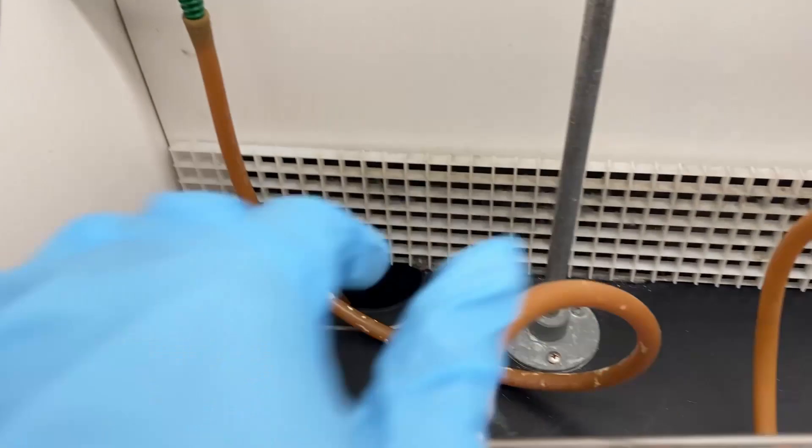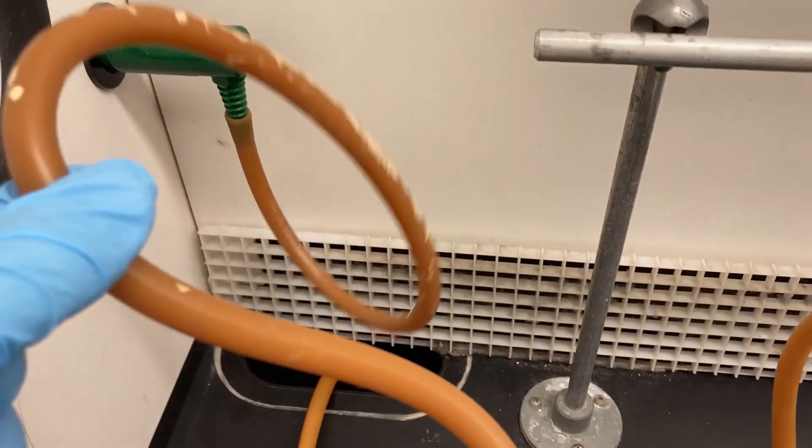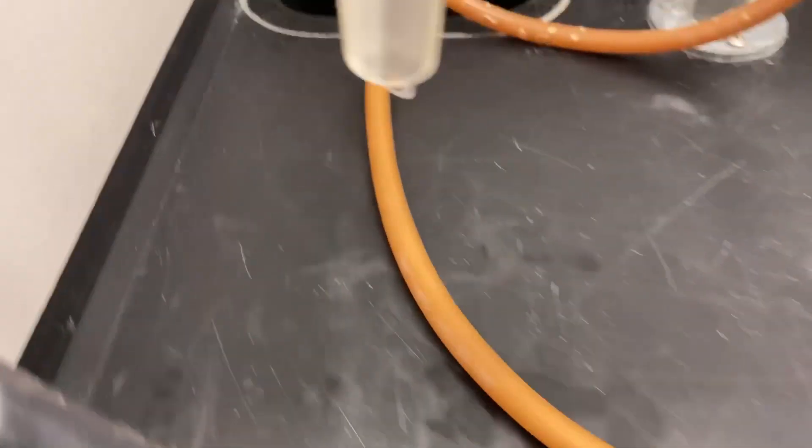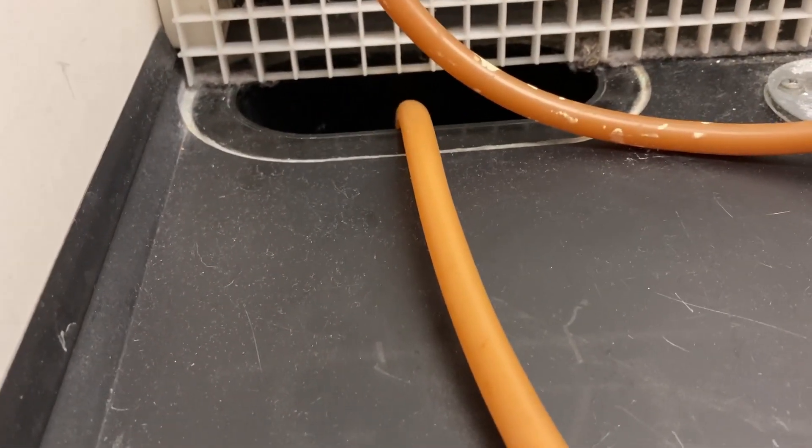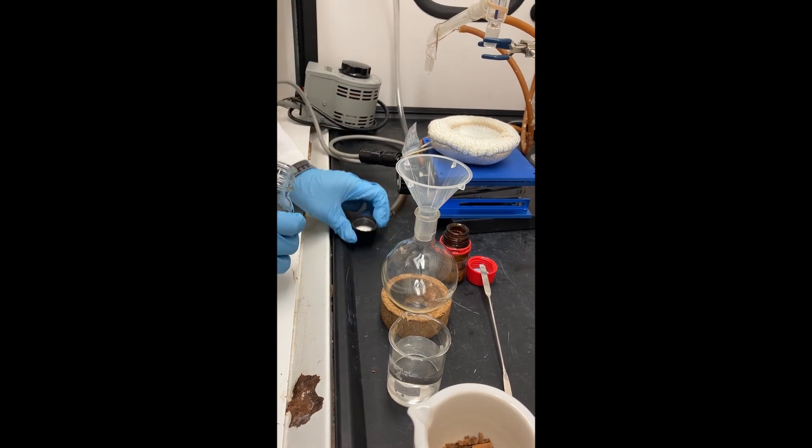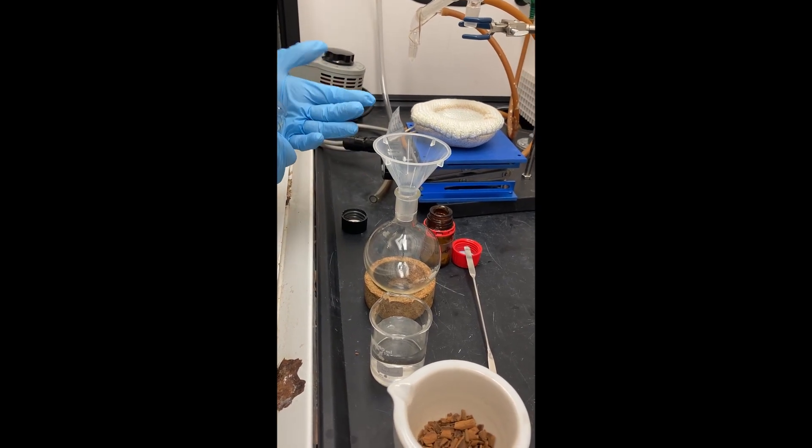Make sure your water hoses are attached correctly to your condenser. Load your round bottom flask, making sure not to get any solid in the grease of the joint as this can affect the seal.